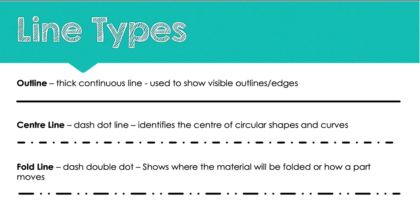A fold line, which is a dash double dot dash line, shows where the material will be folded or how a part moves. These drawings are made for manufacture. So if I had a product that needed folded at one side, then I would put a fold line to show the people who are making the product where the machine should fold it. That just makes sure that everything fits together correctly and that they know exactly what to manufacture.